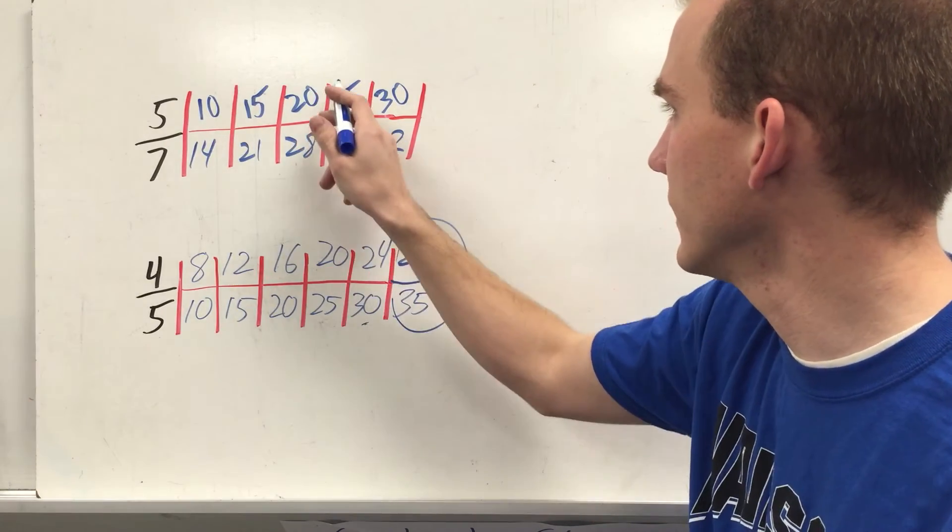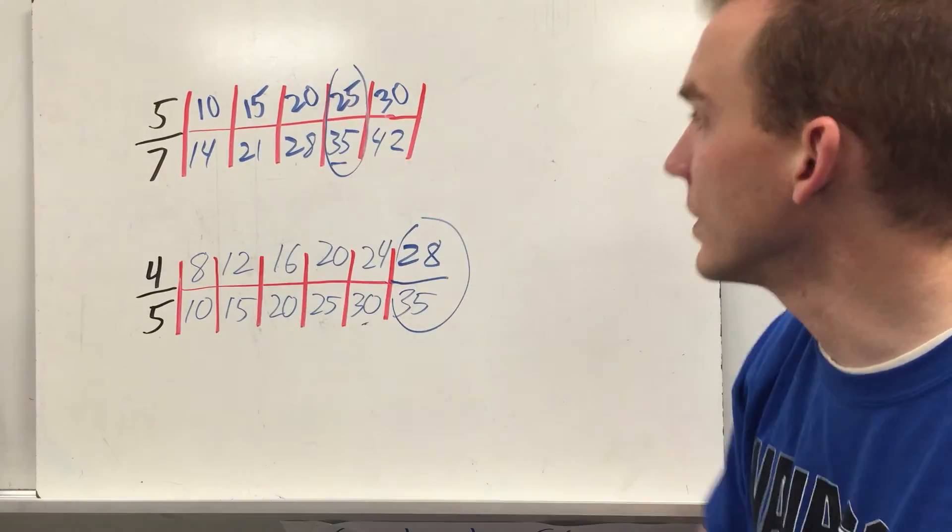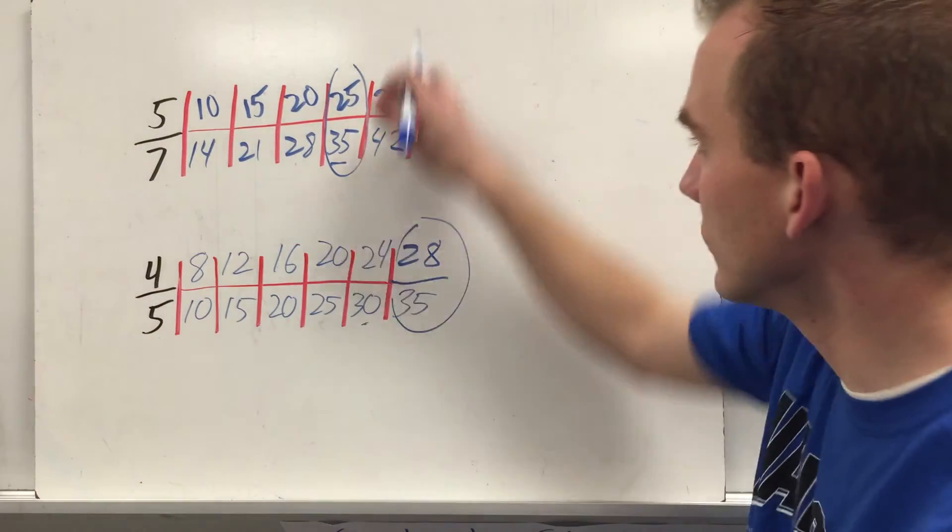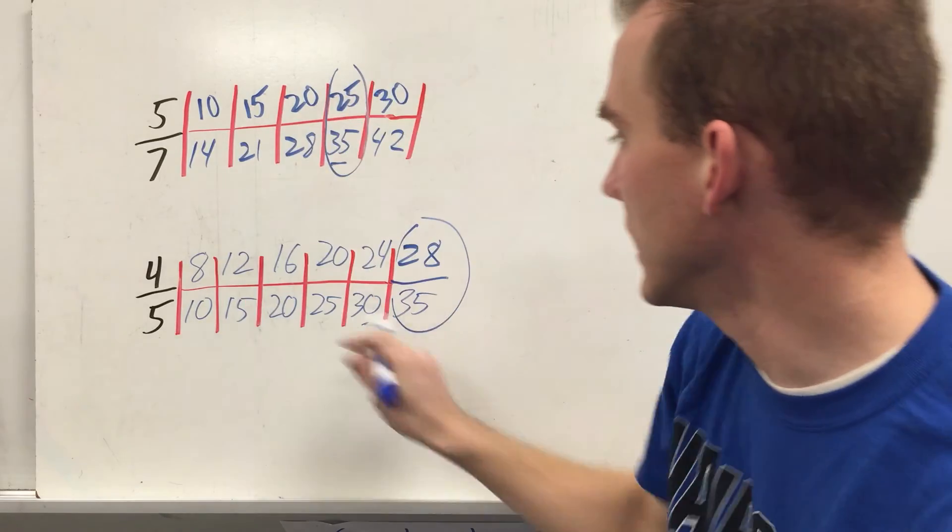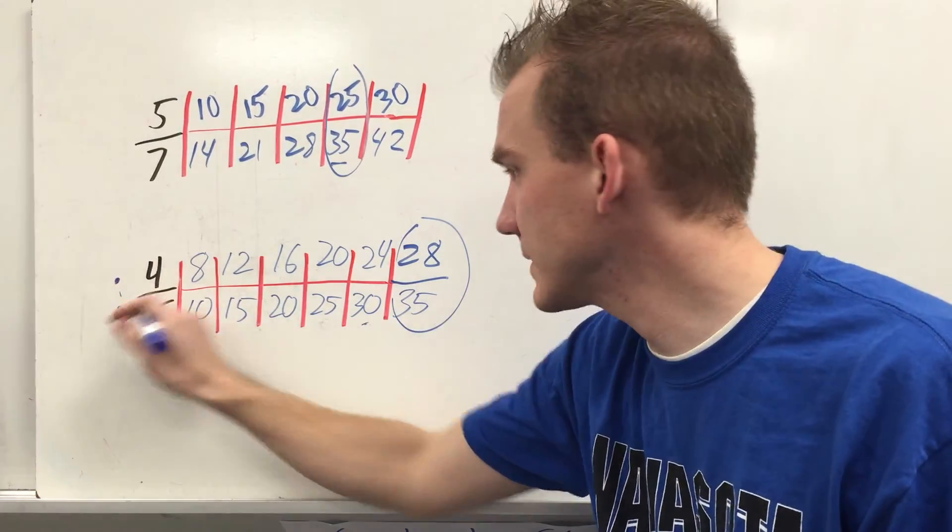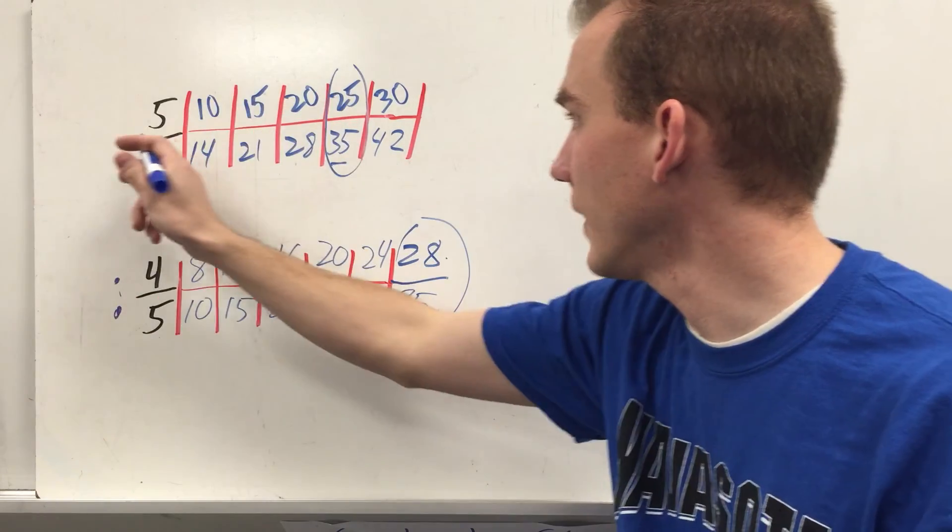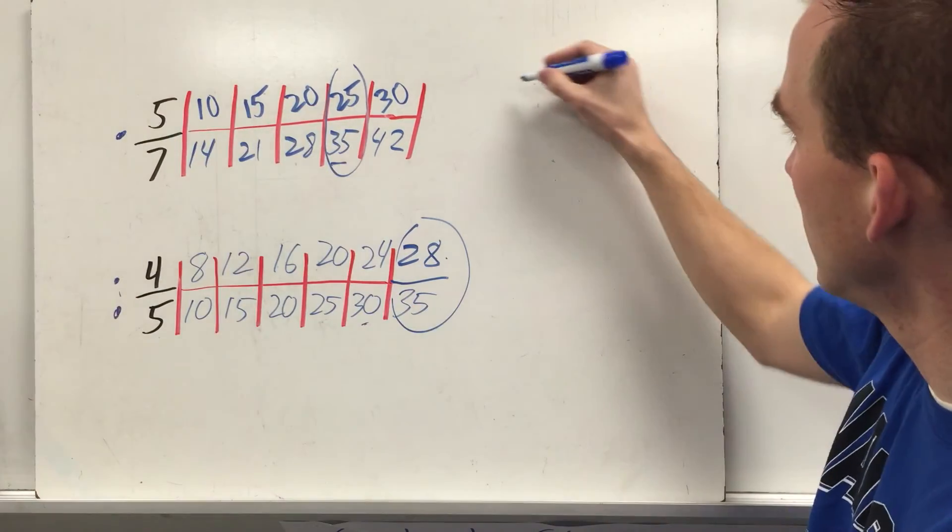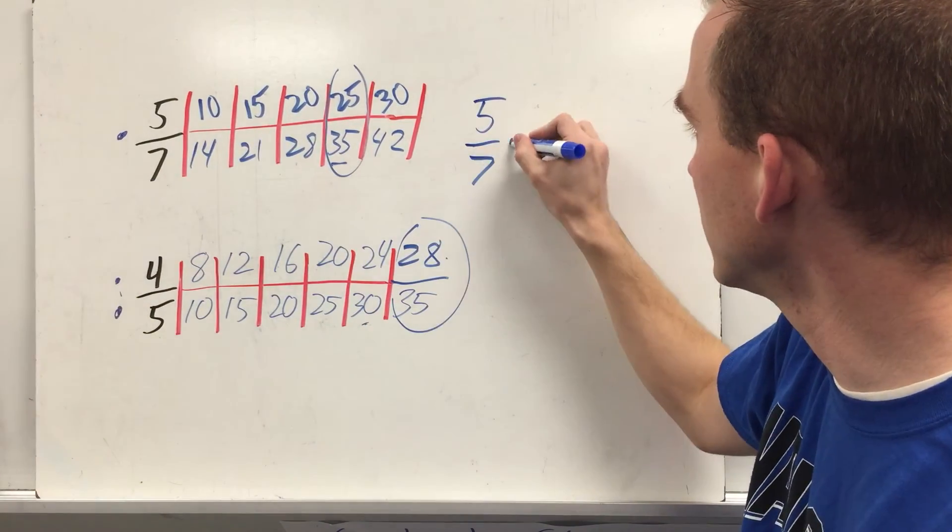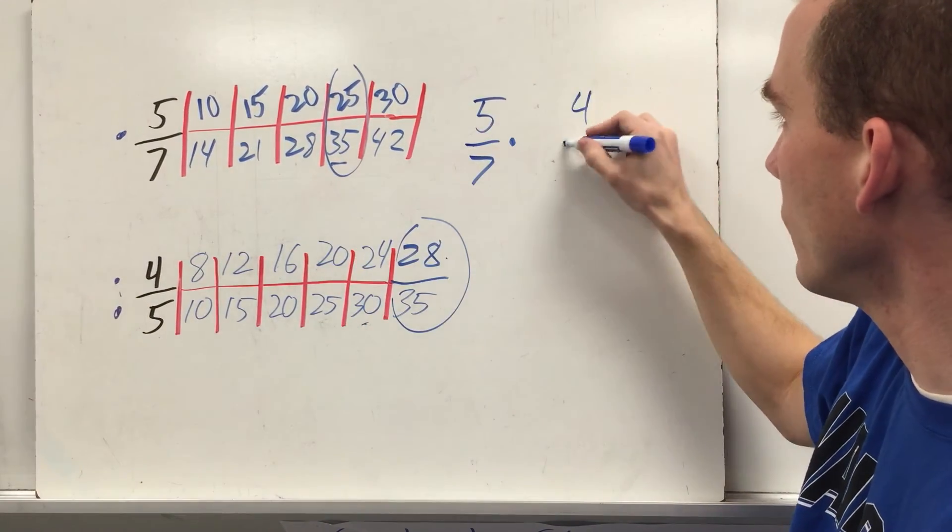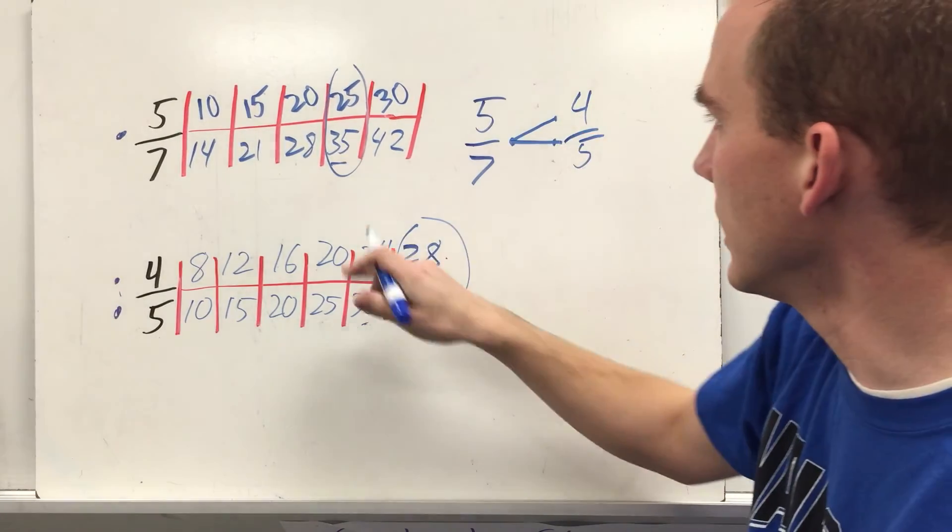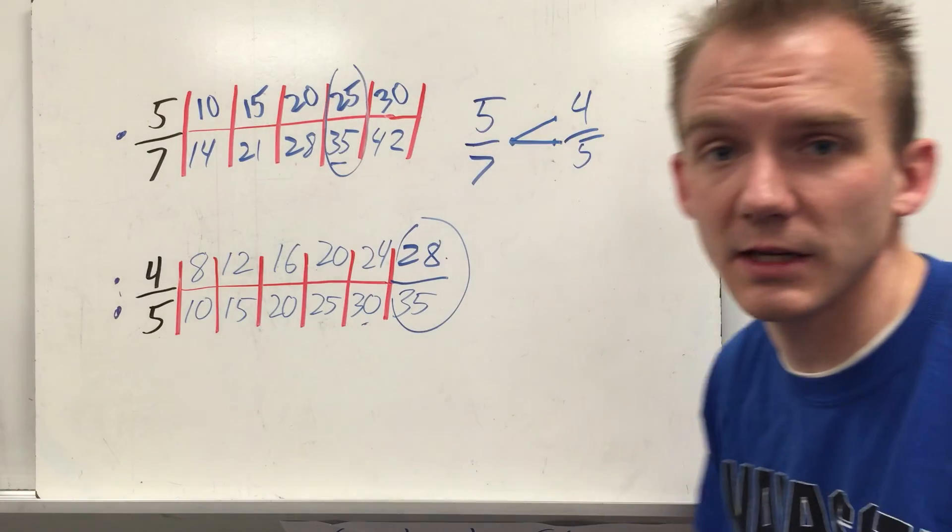And so, you have 28 thirty-fifths and 25 thirty-fifths that are equal to 5 sevenths and 4 fifths. So, 25 is less than 28. So, 4 fifths gets 2 dots because it's greater. And 5 sevenths gets 1 dot because it's less. And then we can compare them. Or 5 sevenths, sorry. 5 sevenths gets 1 dot. And 4 fifths gets 2 dots. And then we connect their dots. And we see that 5 sevenths is less than 4 fifths.